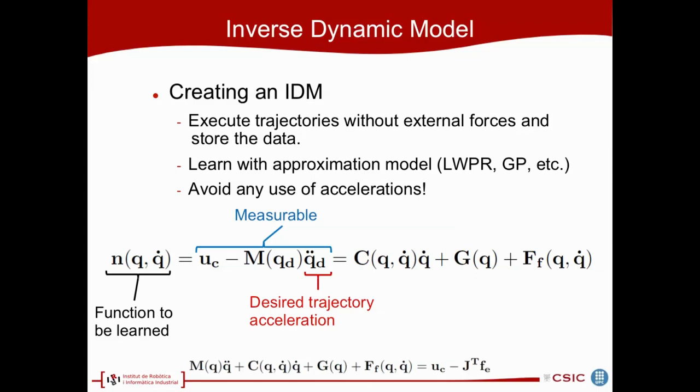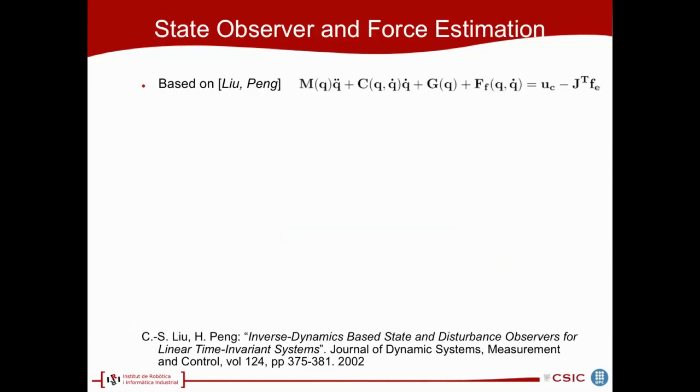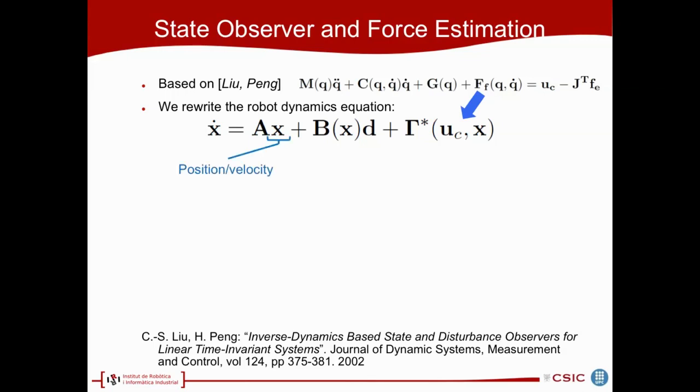We based our work on this article from Li Wenpeng, which mainly converts a dynamic system equation into this form. We can see here that x is the position and velocity term. We have an external action, and all the non-linear terms are gathered in this gamma.